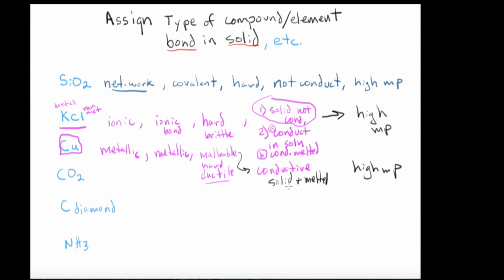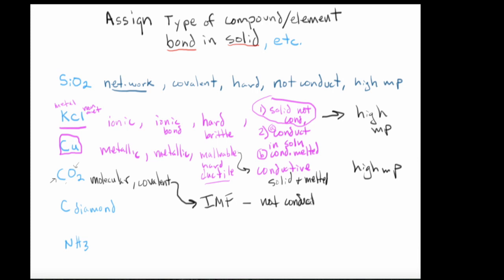KCl also has a high melting point — I forgot to mention that. Now moving to CO₂: this is molecular, which should be obvious because carbon and oxygen are both non-metals. It has covalent bonds, and the forces that hold the molecules together are IMFs. It is not conductive and has a low melting point.